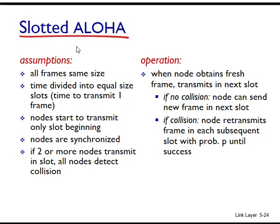The operation of slotted ALOHA in each node is simple. When the node has a fresh frame to send, it waits until the beginning of the next slot and transmits the entire frame in the slot. If there is no collision, the node has successfully transmitted its frame and does not need to retransmit. On the other hand, if there is a collision, the node detects the collision before the end of the slot and retransmits its frame in each subsequent slot with probability P. Retransmitting with probability P means the node effectively tosses a coin — heads corresponds to retransmit (probability P), and tails corresponds to skip the slot and toss the coin again in the next slot (probability 1-P).